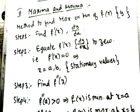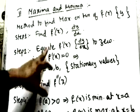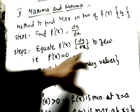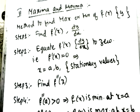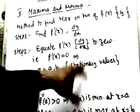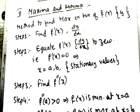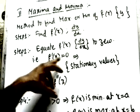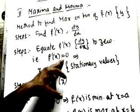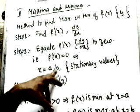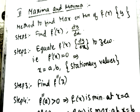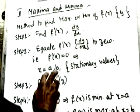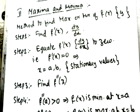The second step is to equate f′(x) to zero and solve. The values of x we get are called stationary values — at these values we will get either a maximum or a minimum. To determine which, we go to the third step: differentiate again to get f″(x).